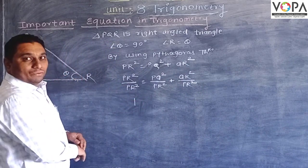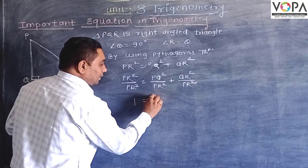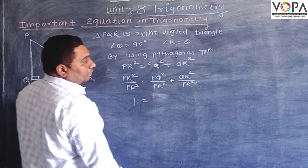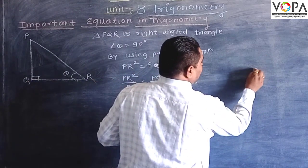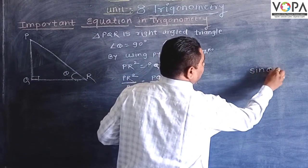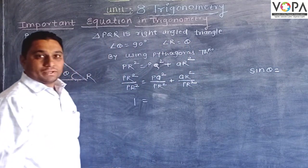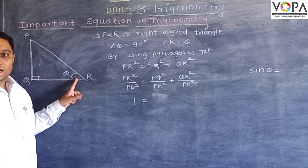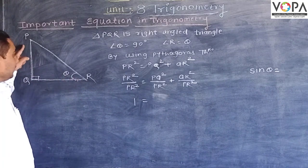Now let us see the figure. What is the sine ratio? Sine of theta - look at this figure, this is our angle theta and sine ratio is opposite side to hypotenuse, so PQ upon PR. That is our sine ratio.